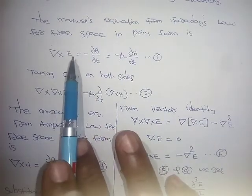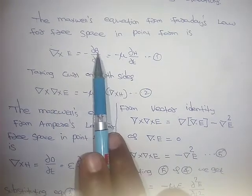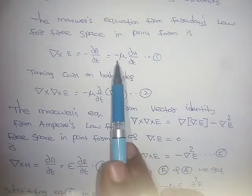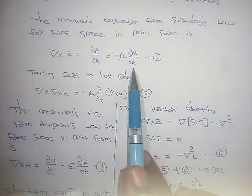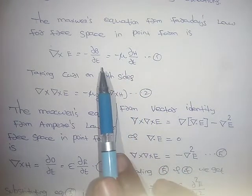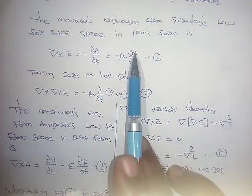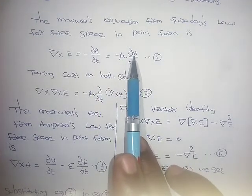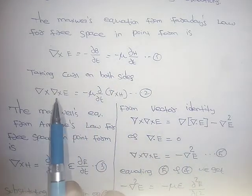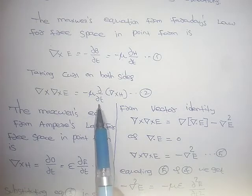From Faraday's law: Del cross E equals minus dB/dt. Since B equals μH, this becomes Del cross E equals minus μ dH/dt. Taking the curl of both sides: del cross del cross E equals minus μ d/dt (del cross H).